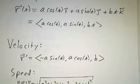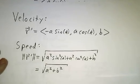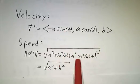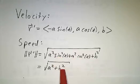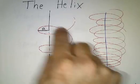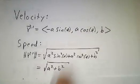Then we want to figure out what our speed is. The speed is just the magnitude of the velocity, so you take the square root of each component squared. a²·sin²(t) and a²·cos²(t) together add up to a², giving us √(a² + b²). As you keep going around the circle and drifting upwards, you're always moving at the exact same speed, which has a horizontal part and a vertical part.